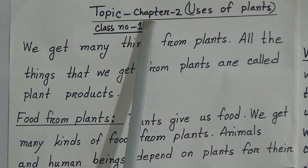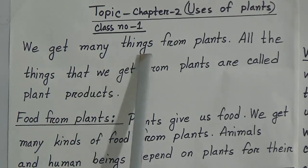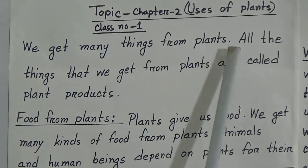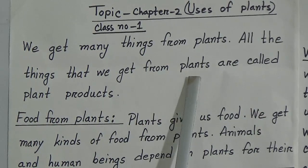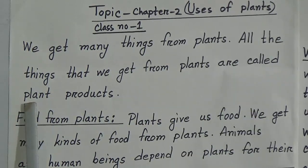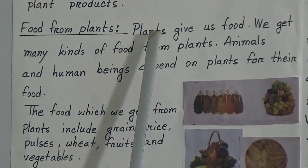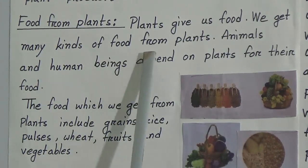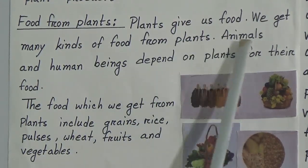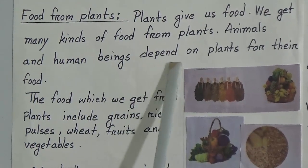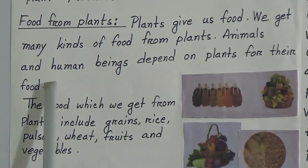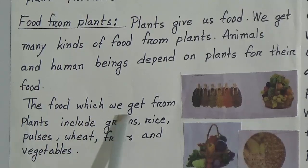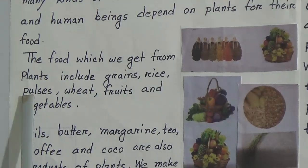We get many things from plants. All the things that we get from plants are called plant products. Food from plants — plants give us food. We get many kinds of food from plants. Animals and human beings depend on plants for their food.